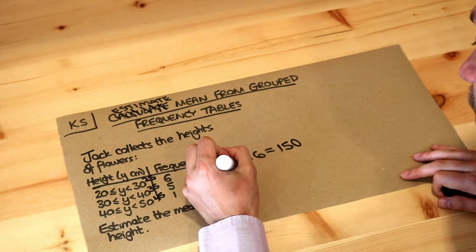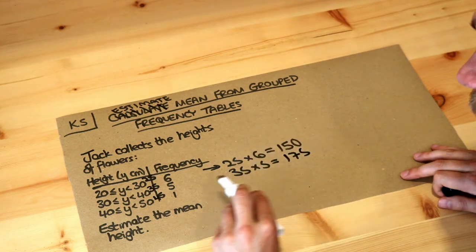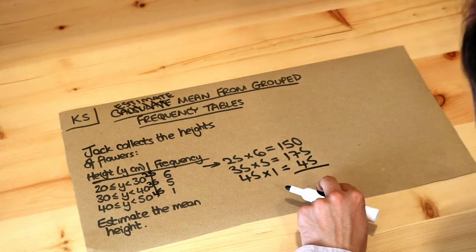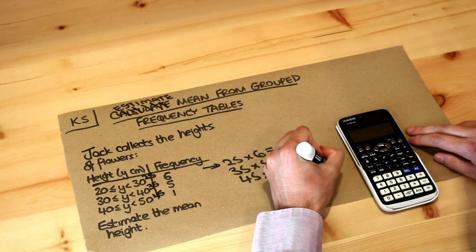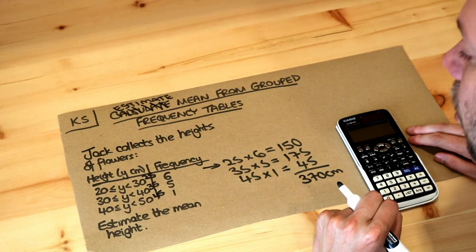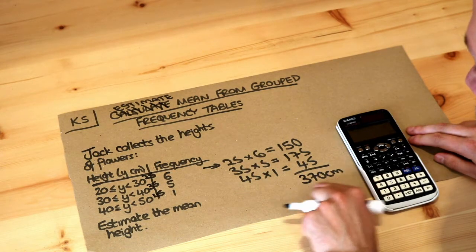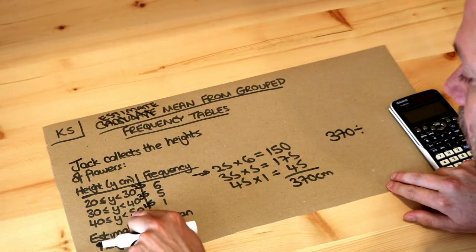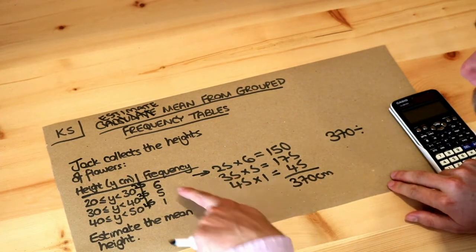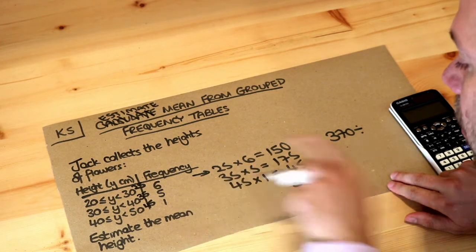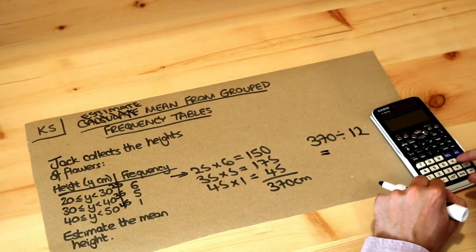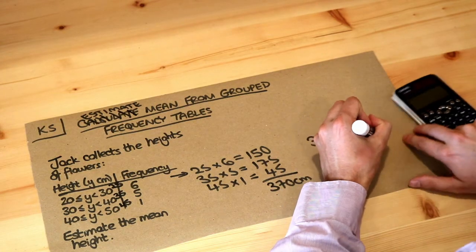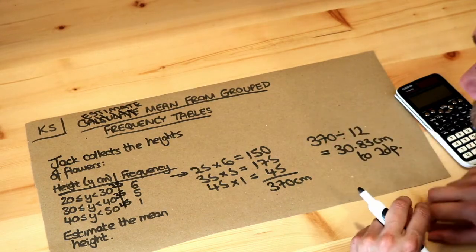We do 35 times 5 which is 175, and then 45 times 1 which is 45. We add them up and get 370 centimetres — that's an estimate of the total height of all the flowers. Now we divide by the total frequency: not by three (the number of rows), but by the total number of flowers, which is 6 plus 5 plus 1 equals 12. So 370 divided by 12 gives us 30.83 centimetres to two decimal places.